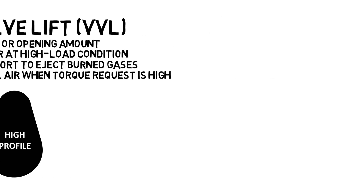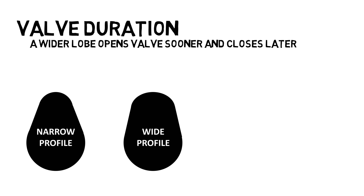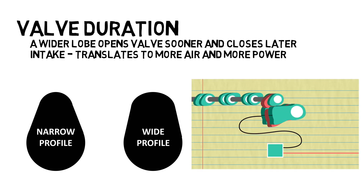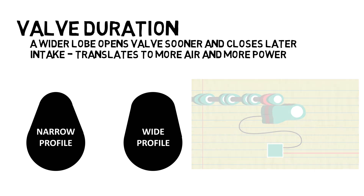The last type of variable valve technology is designed to adjust opening duration. During heavy pedal application, changing to a wider lobe on the intake camshaft means the valve opens sooner and closes later, translating into more air and more power. This approach, in conjunction with VVL, is commonly used in Honda's VTEC system.